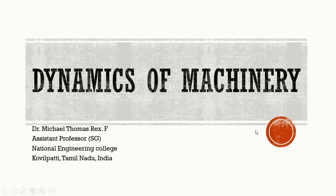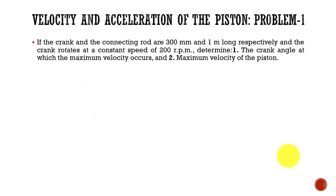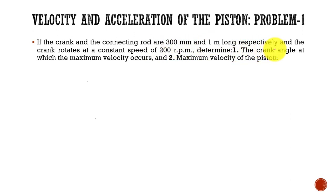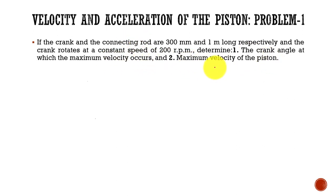Welcome to my lecture. Today we are going to see how to apply the equation of velocity of the piston to solve a problem in a slider crank mechanism. The problem states: if the crank and the connecting rod are 300 mm and 1 meter long respectively, and the crank rotates at a constant speed of 200 rpm, determine the crank angle at which the maximum velocity occurs and the maximum velocity of the piston.